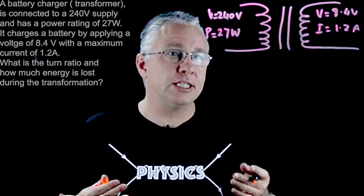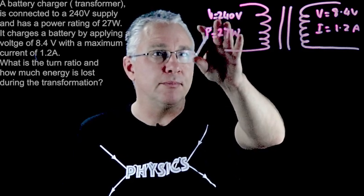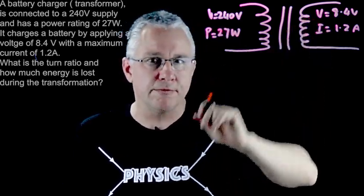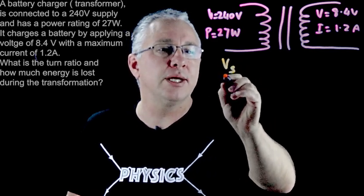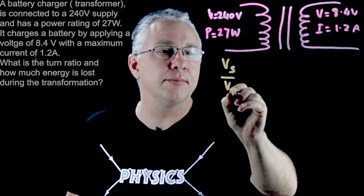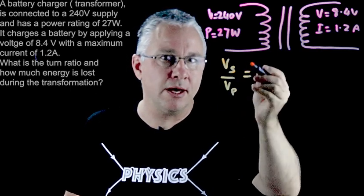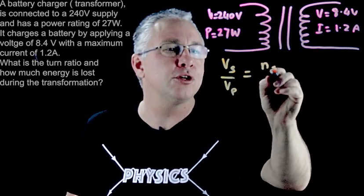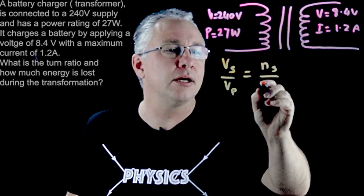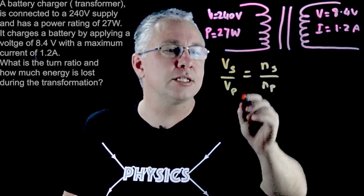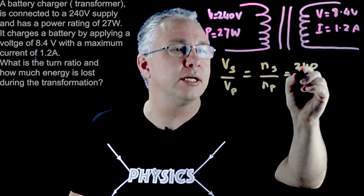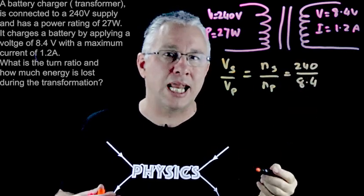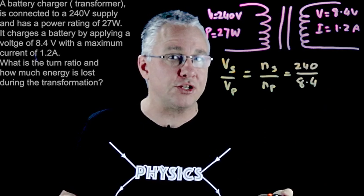Well the turn ratio is fairly straightforward. This, clearly starting from a high voltage to a low voltage, is a step down transformer which basically says that the voltage between the secondary and the primary is the same ratio as the number of turns in the secondary over the primary. And so since this value here is known, which is 240 divided by 8.4, that allows us to work out the turn ratio.